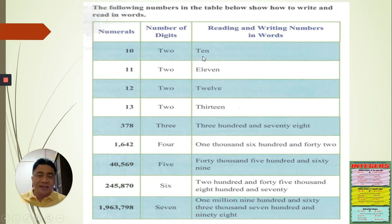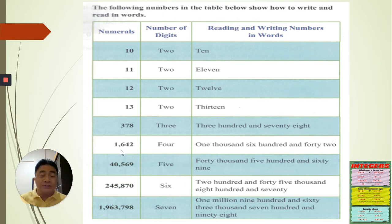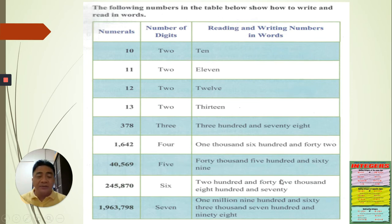Ten consists of two digits: one and zero. Eleven — two digits, one and one. Twelve — two digits, one and two. Thirteen — two digits, one and three. Three hundred and seventy-eight has three digits: three, seven, and eight. One thousand six hundred and forty-two is a four-digit number: one, six, four, and two. Forty thousand five hundred and sixty-nine is five digits. Two hundred and forty-five thousand eight hundred and seventy follows. And the last one is one million nine hundred and sixty-three thousand seven hundred and ninety-eight.